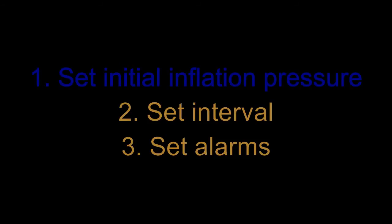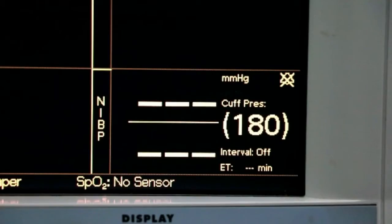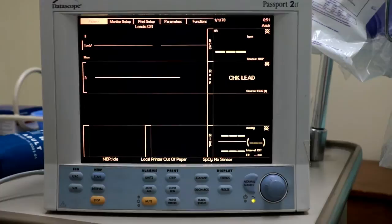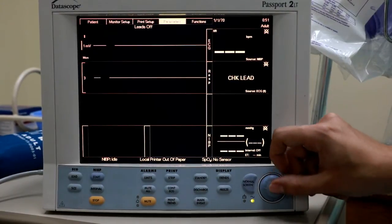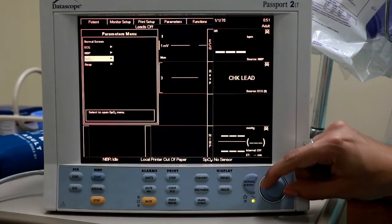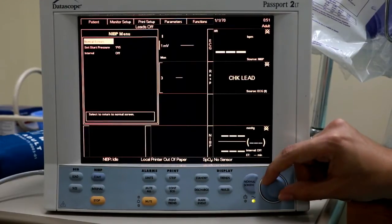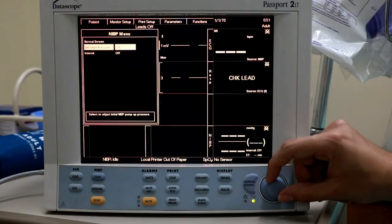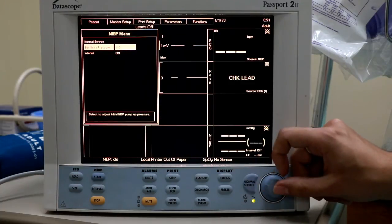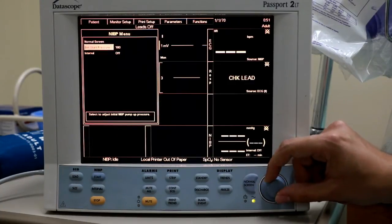On most NIBP devices, there is a default initial inflation pressure of 180 mmHg, which is set automatically when the device turns on. However, if you require a higher or lower inflation pressure to adequately restrict blood flow through the artery, then this initial value can be changed. To do this, go under the Parameters menu, select NIBP, then choose Set Start Pressure. From here, utilize the knob to adjust the inflation pressure. When done, return to the Normal or Home screen.